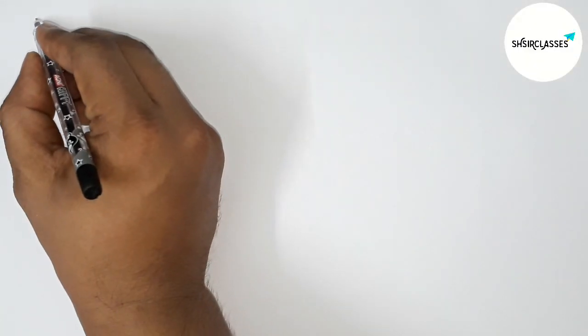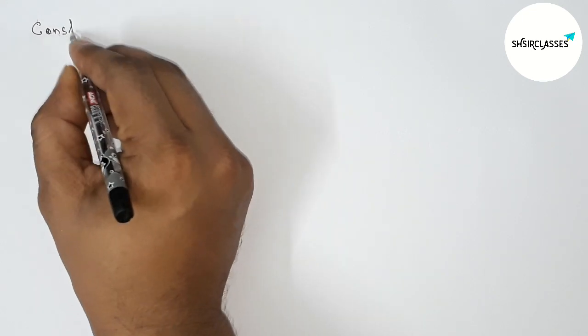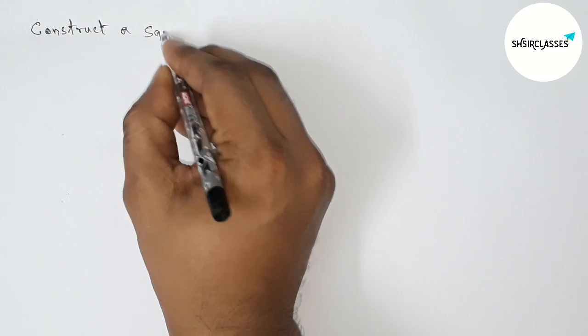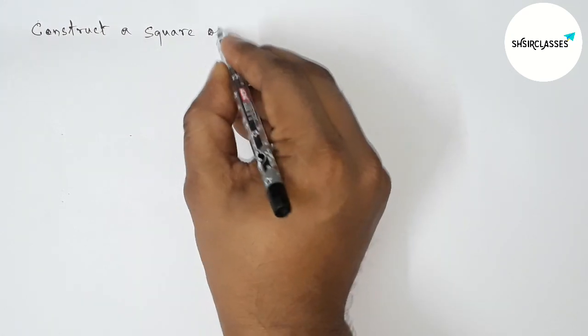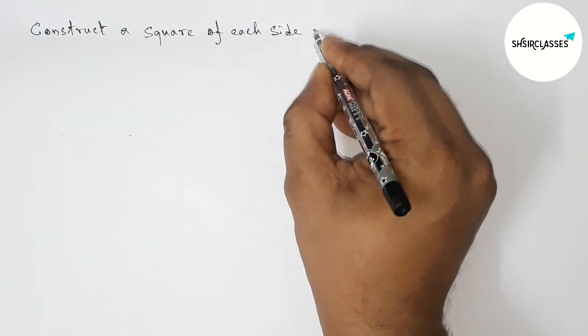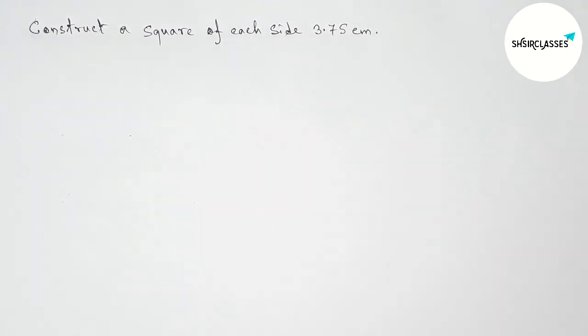Hi everyone, welcome to SI share classes. Today in this video we have to construct a square of each side 3.75 centimeter in easy way. So please watch the video till the end, so let's start the video.